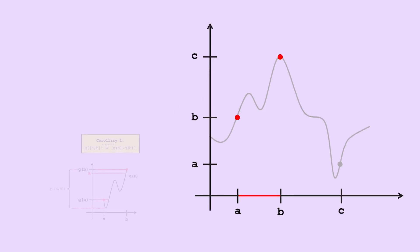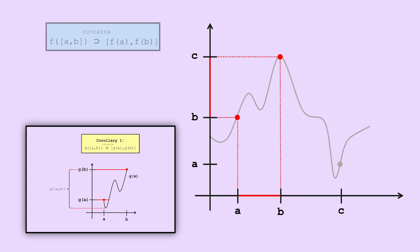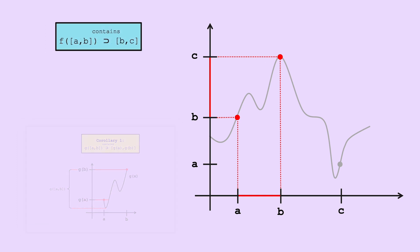From our first corollary of the intermediate value theorem, f of the interval ab contains the interval f of a to f of b, which is just the interval bc. In other words, for every value y in bc, we know there's a point x in ab such that f of that point is y.